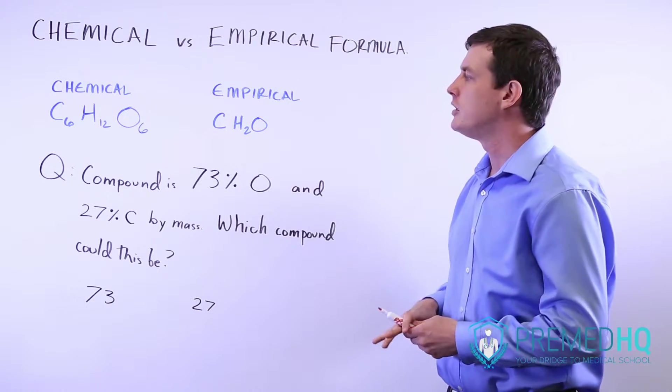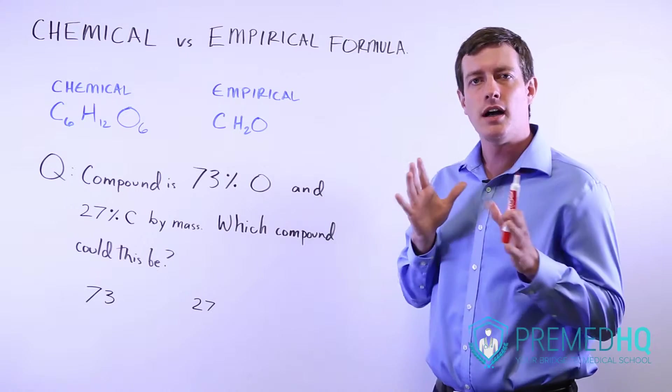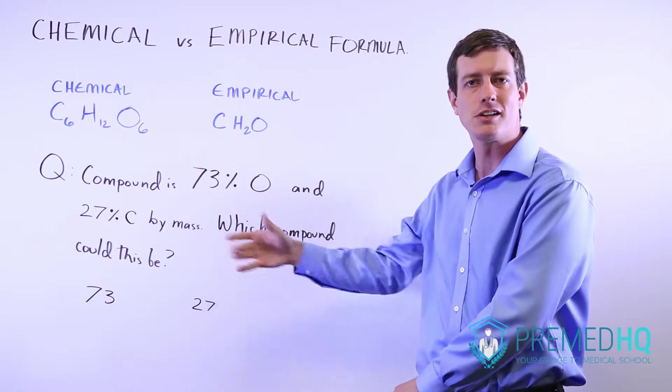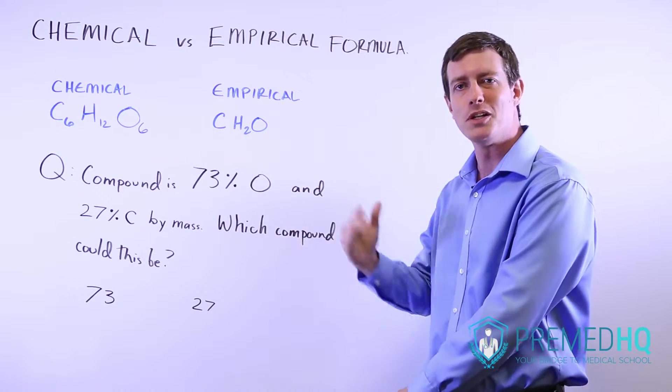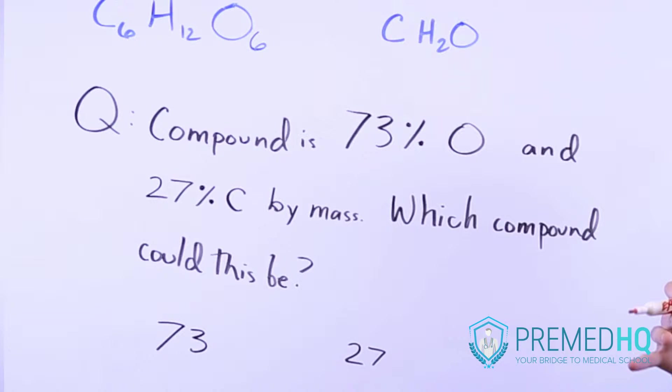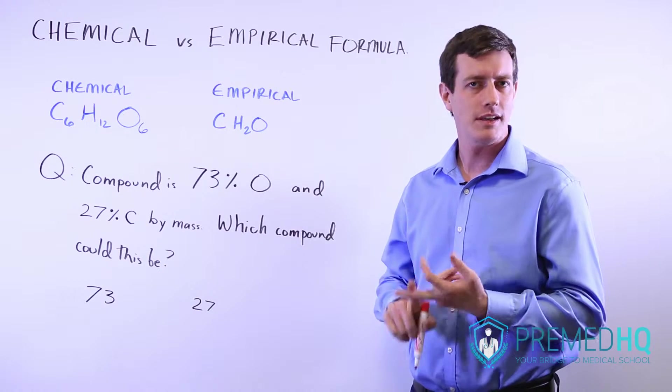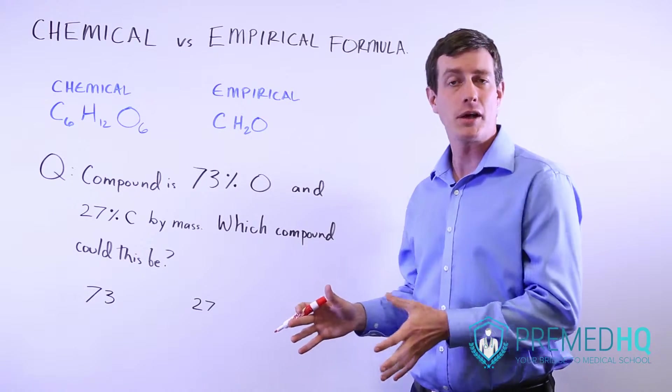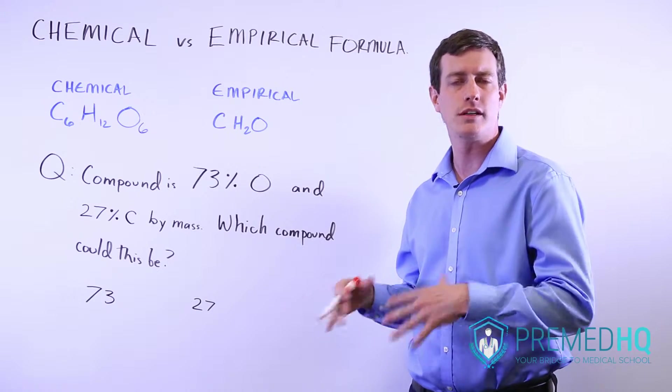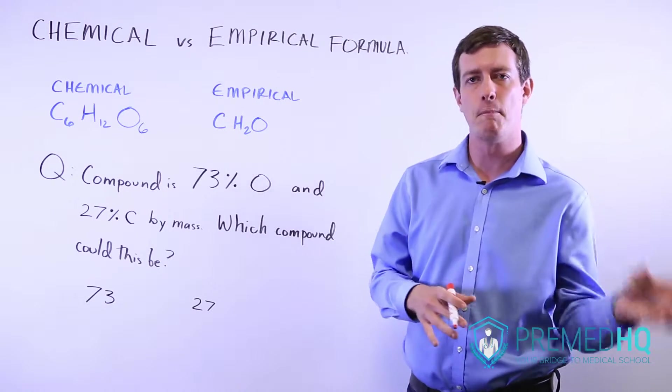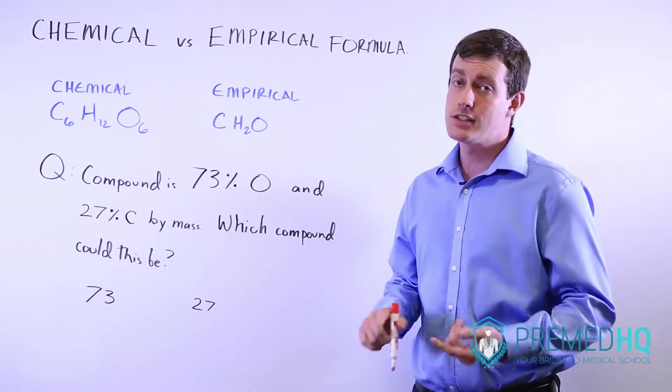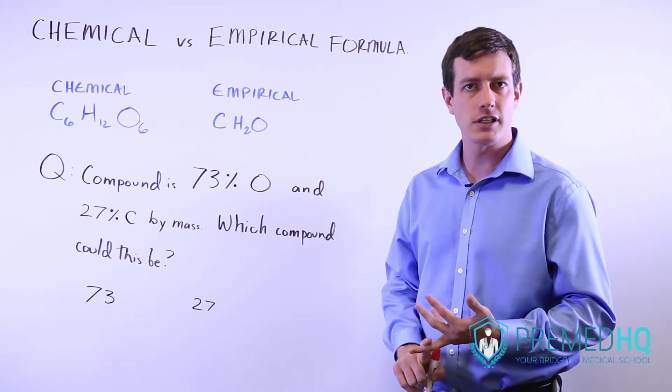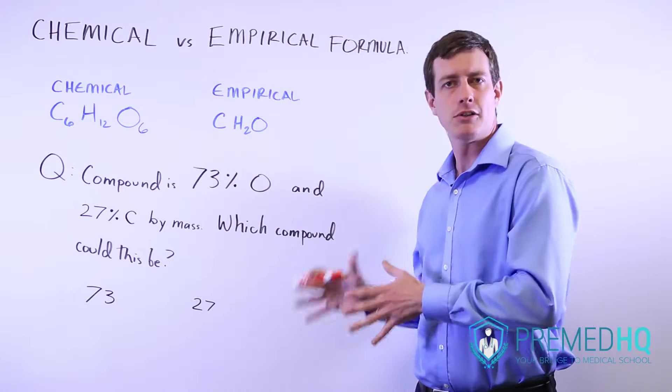We're going to work through this using the empirical formula, and that can clue us into a series of potential chemical formulas. Usually in a multiple choice test, those answers will be provided and only one will apply. There are a few compounds you should know the mass numbers for offhand: carbon, nitrogen, oxygen, and hydrogen. Carbon has a mass number of 12, oxygen is 16, nitrogen is 14, and hydrogen is 1. Those are four you'll likely be responsible for.